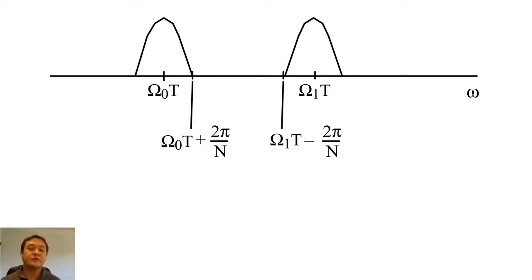On this graph, we show the main lobes of one cosine function centered at omega 0 and one cosine function centered at omega 1. When these main lobes are far apart, we can easily tell that there are two cosines.